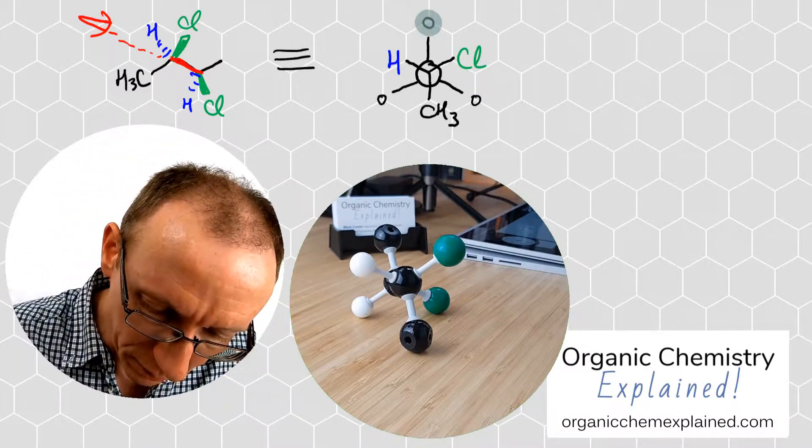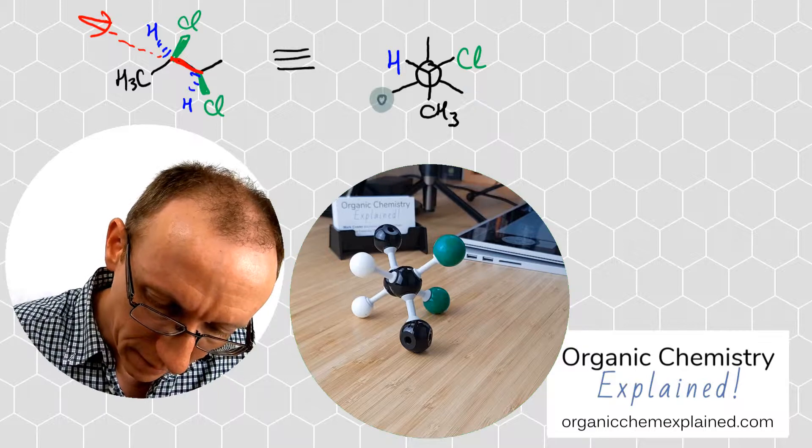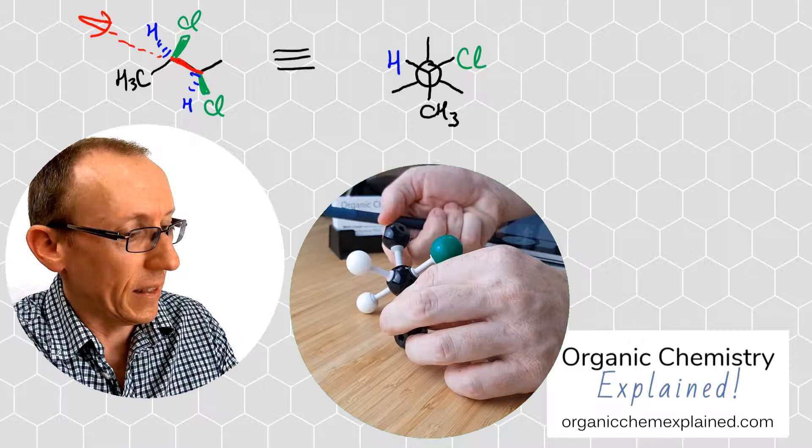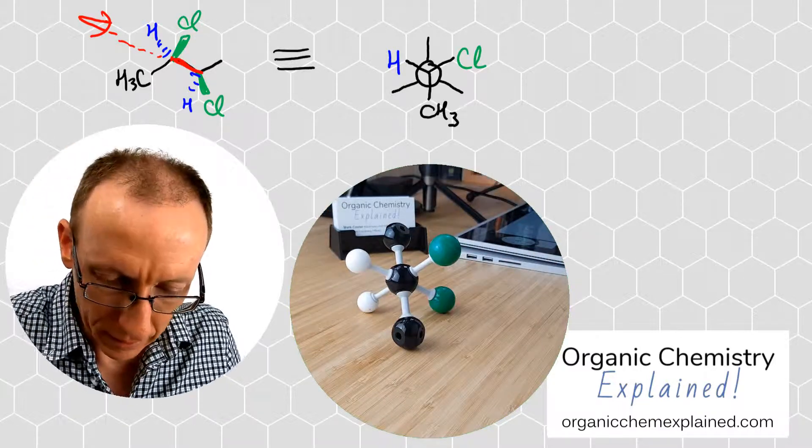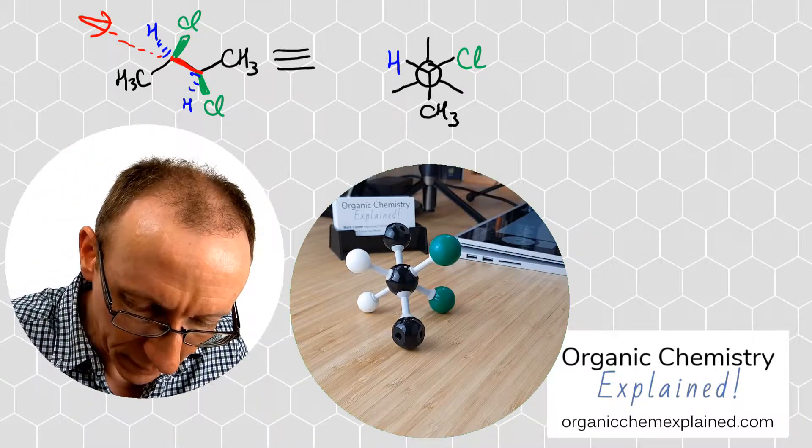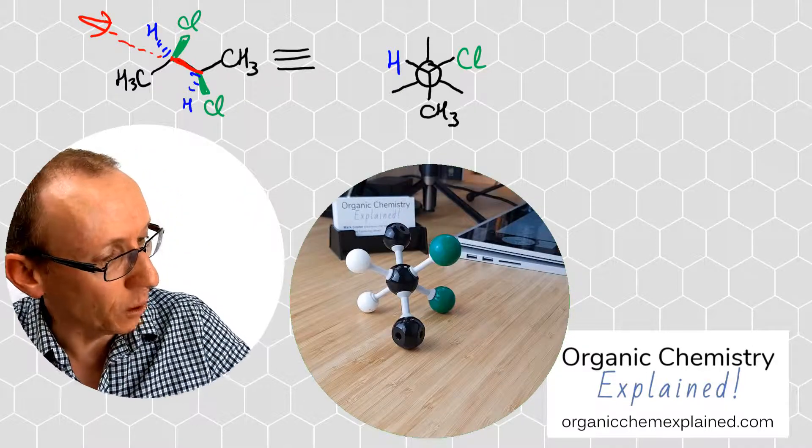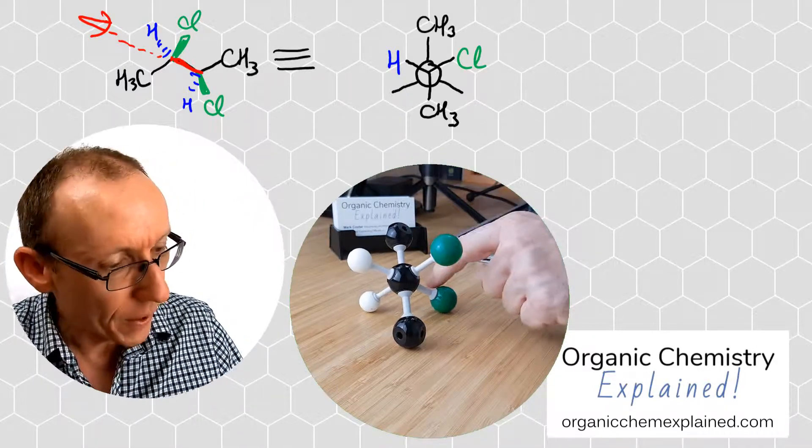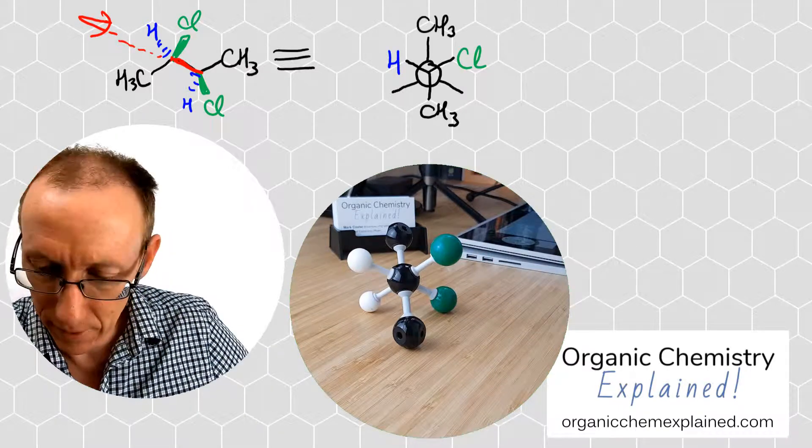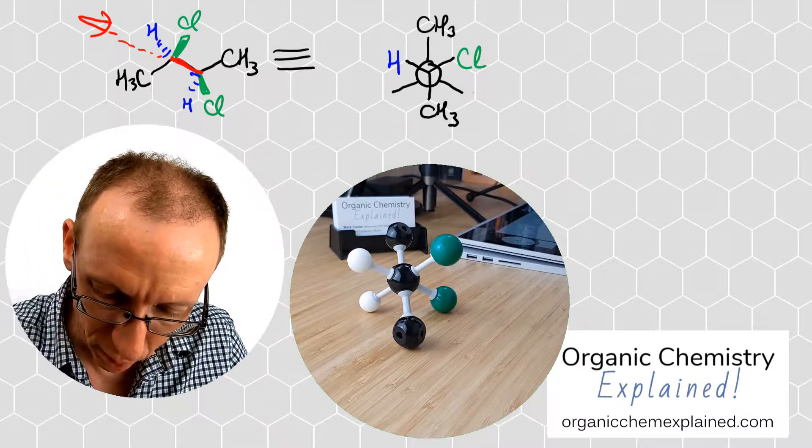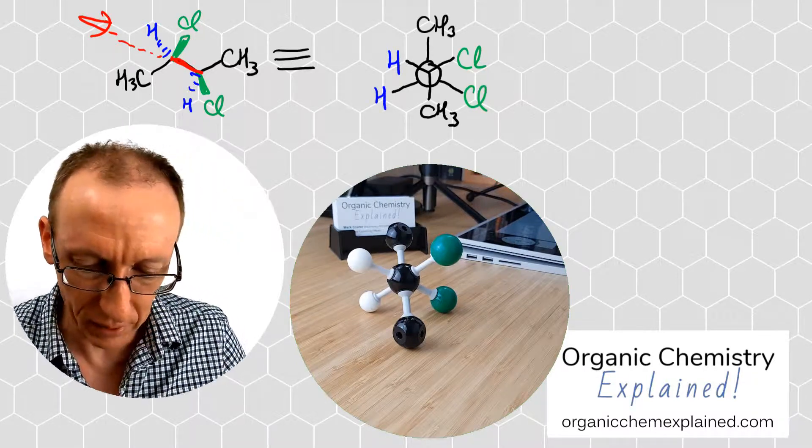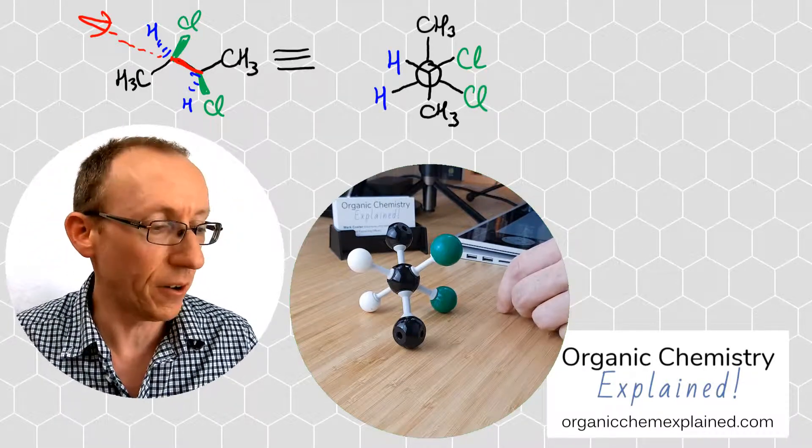The group that is going straight up here is this methyl group. This methyl group here is going up as we look at it from this direction. So there it is there. The chlorine is going off to the right. We draw that chlorine atom in green and the hydrogen is going off to the left. And so now we've got our Newman projection.